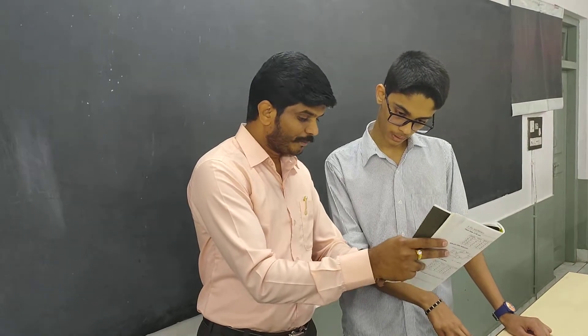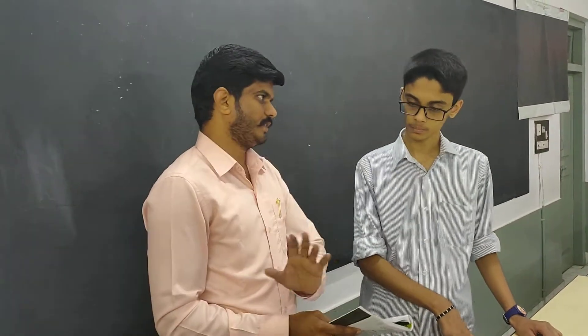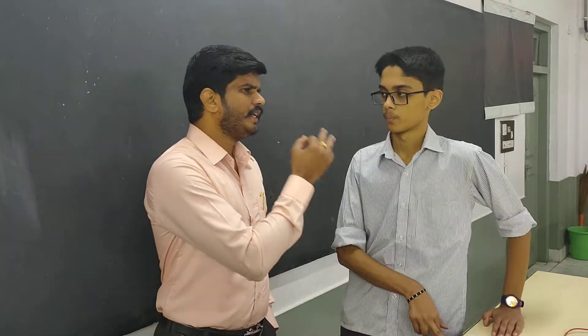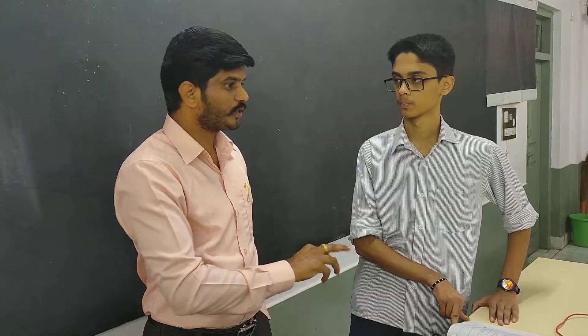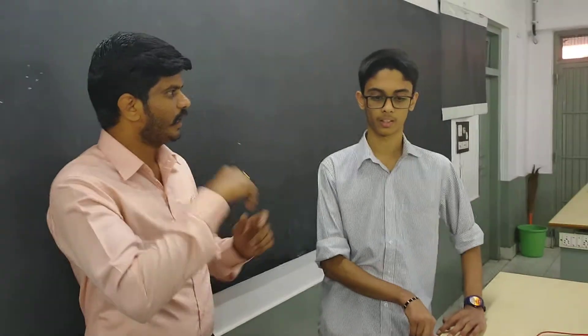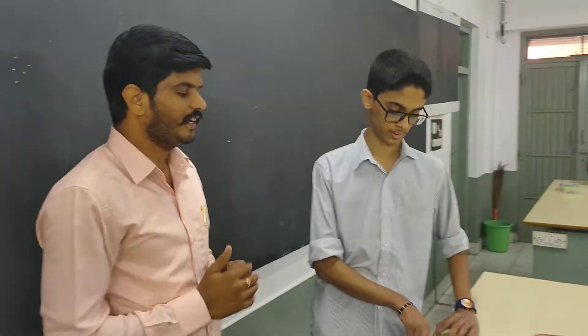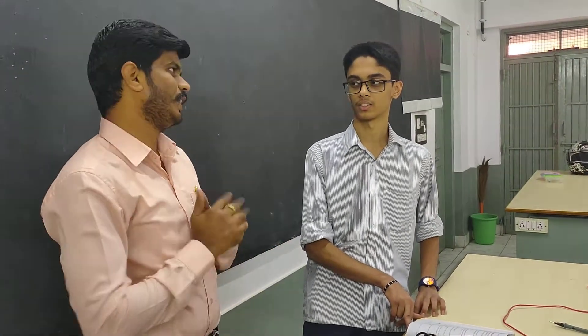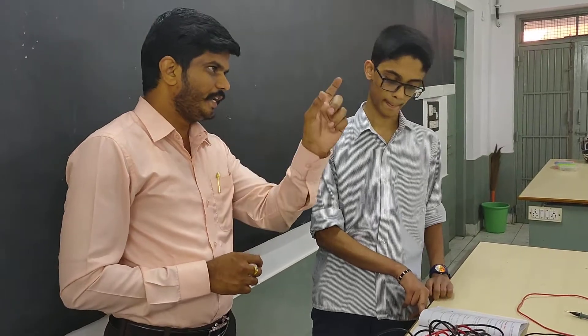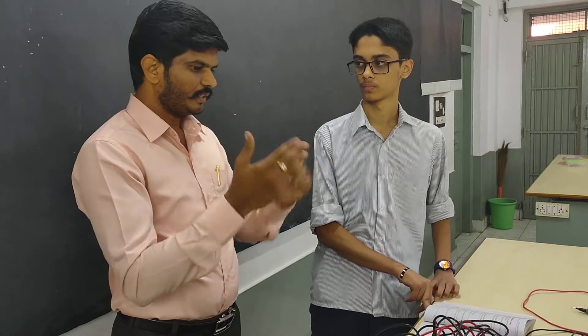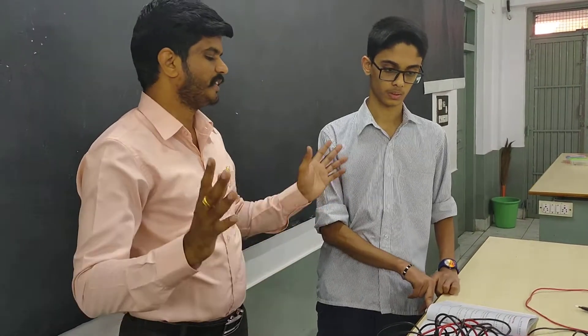When NOR gate means, when inputs are low, by that time only it is high. The rest of the any cases, means if any one input is high, output is always to be low. That is the specialty of this gate. And then we will ask you, name the gate which can produce the high output when inputs are different. Which gate? XOR. Name the gate which produce the low output when inputs are different. XNOR. Is it clear? So, inputs are high, output is low in XNOR. Inputs are different, output is what? Low. That is the specialty of this gate.